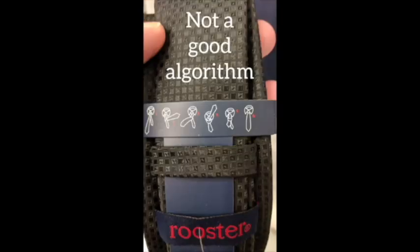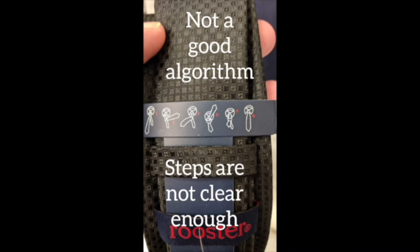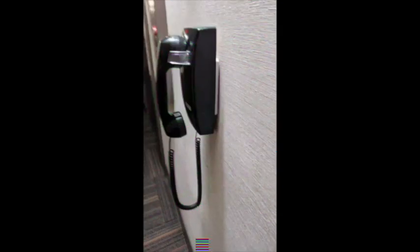On the other hand, this diagram for how to tie a tie, I don't think this is a good algorithm. It's not explicitly clear how to get from one step to the next. So it could be a matter of interpretation whether or not an algorithm is clear or not.